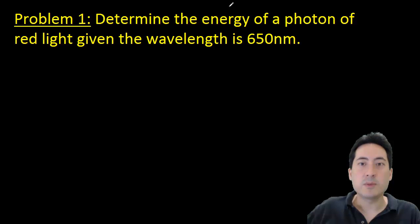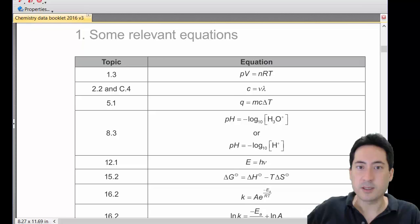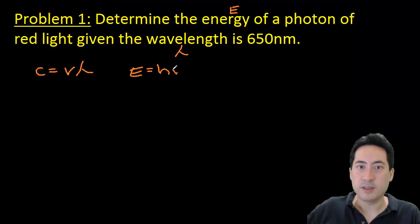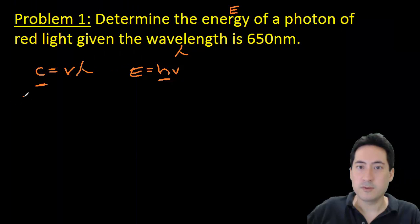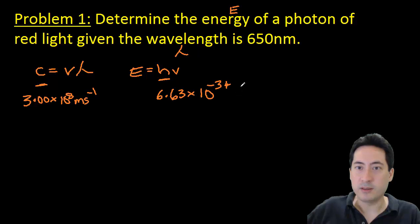So going into some problems now. Problem one, determine the energy of a photon of red light given the wavelength as 650 nanometers. So how do we solve this problem? E is the energy. Wavelength here is lambda. And so we get all these equations here from our data booklet. And so speed of light is frequency by lambda. Energy is Planck's constant by nu, which is the frequency. And we can get all those numbers and write them in.